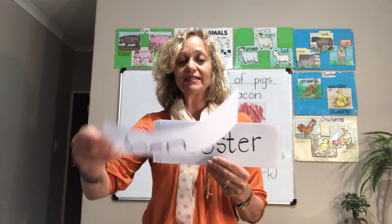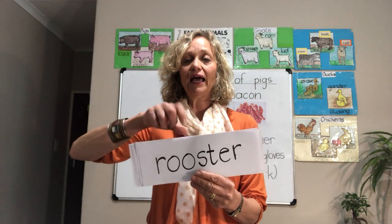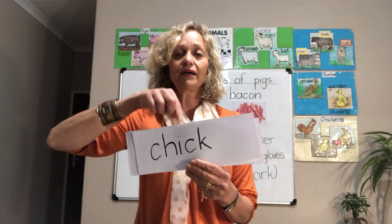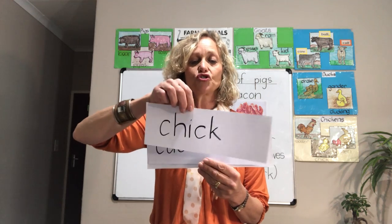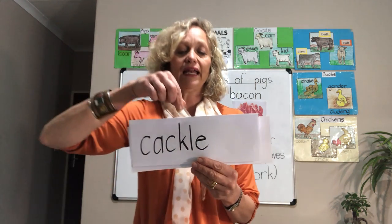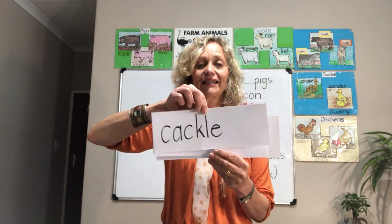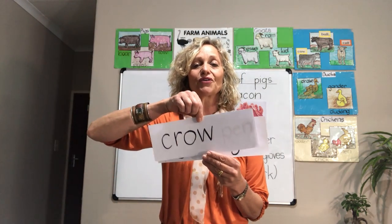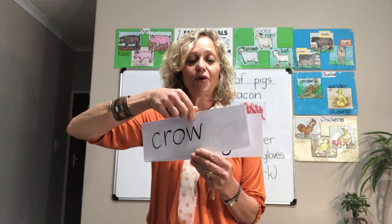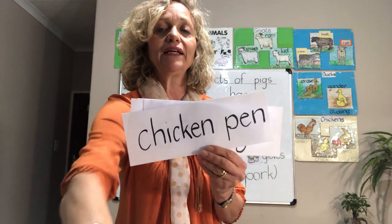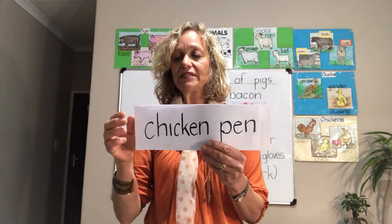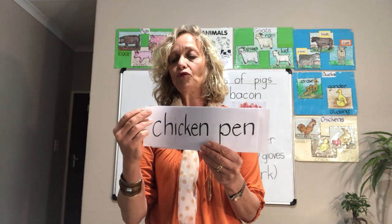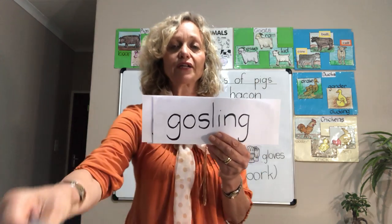That one is hen. This one is the rooster, and that is chick. The hen cackles — cackle! The rooster crows — very good, you are reading nicely. Then we see chicken pen; another word for where chickens stay would be chicken coop.